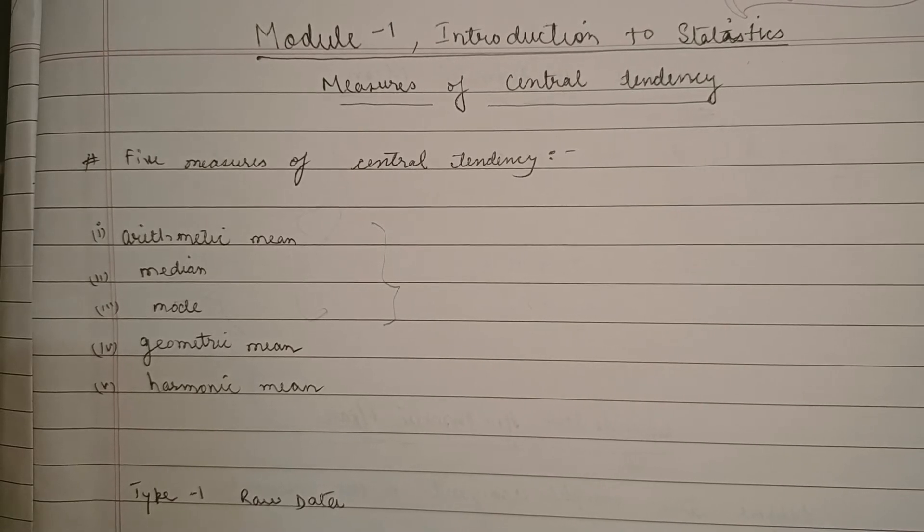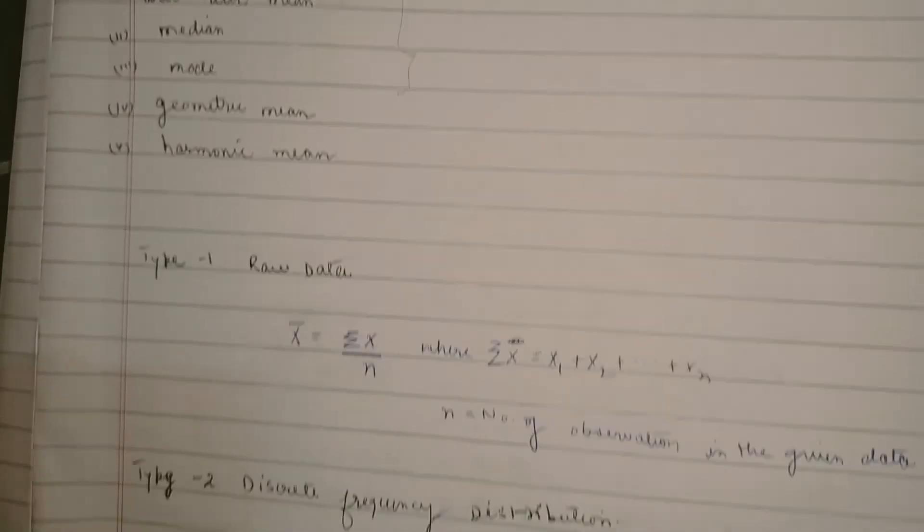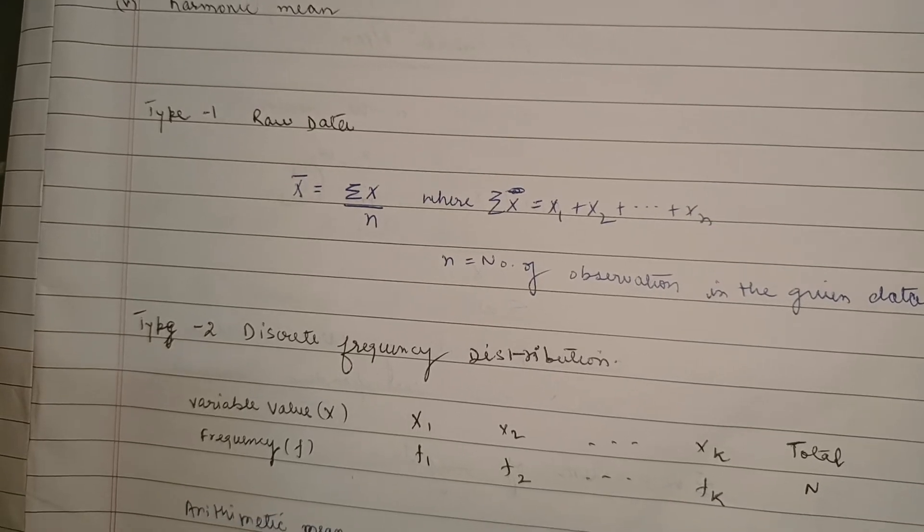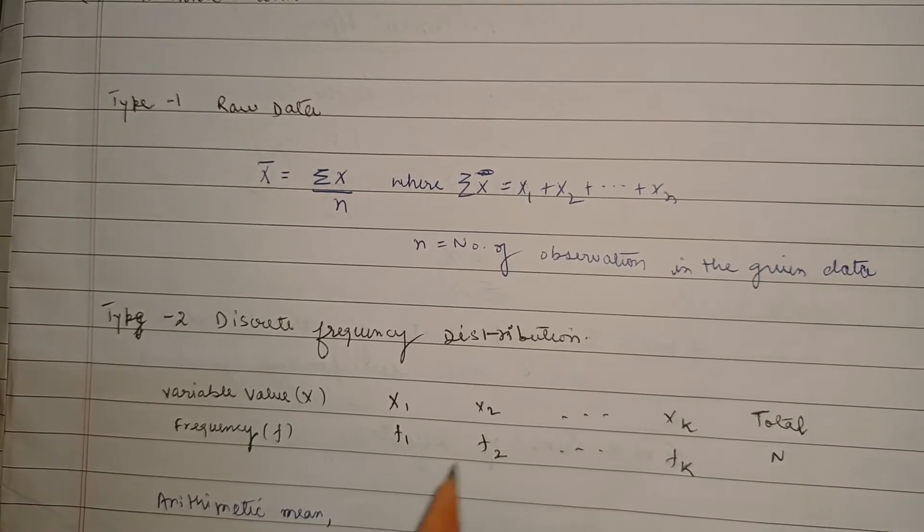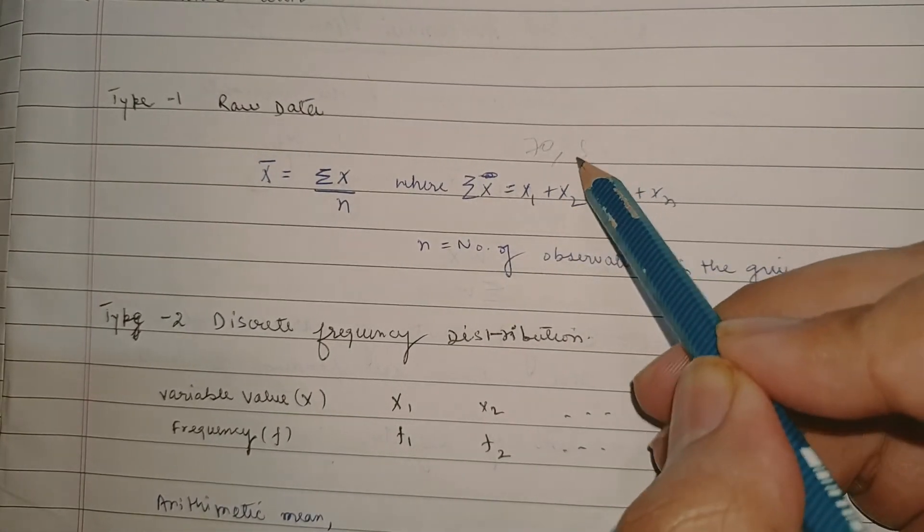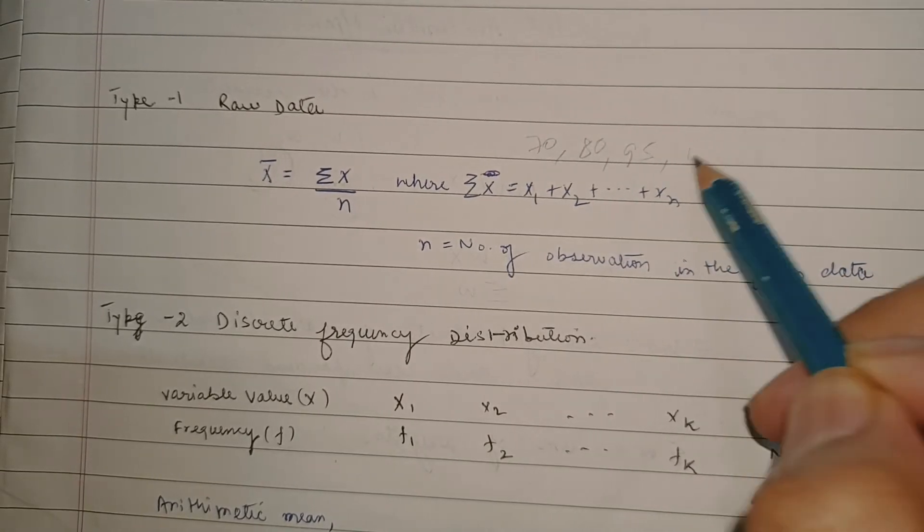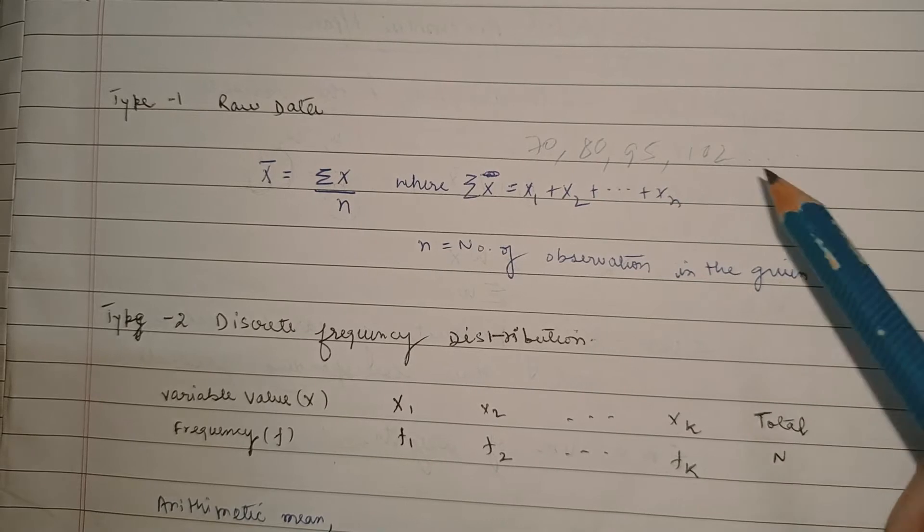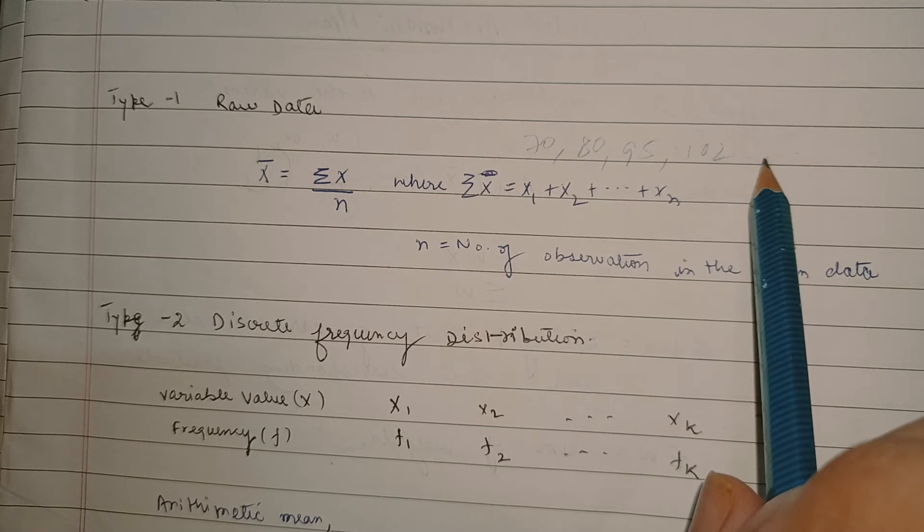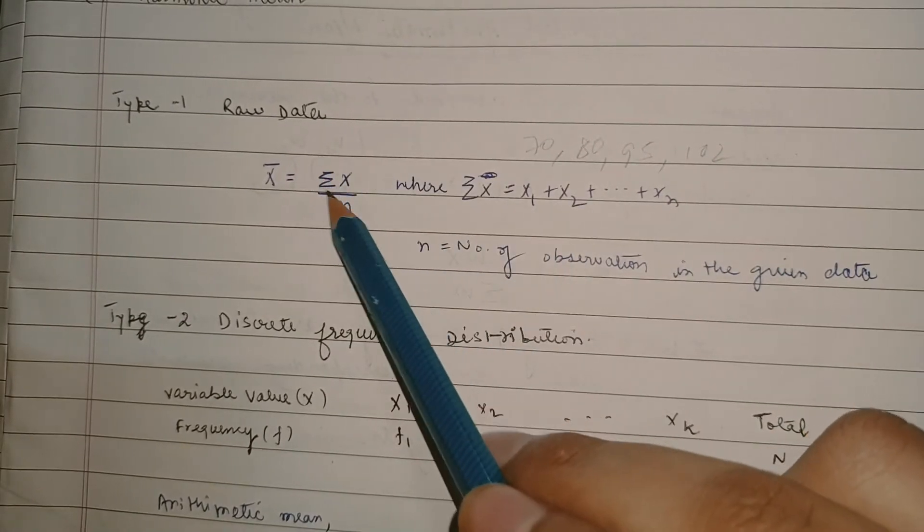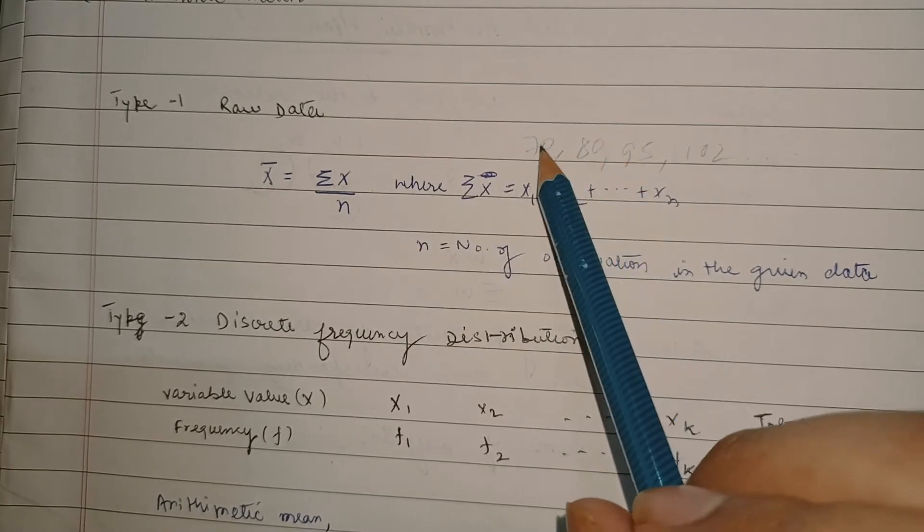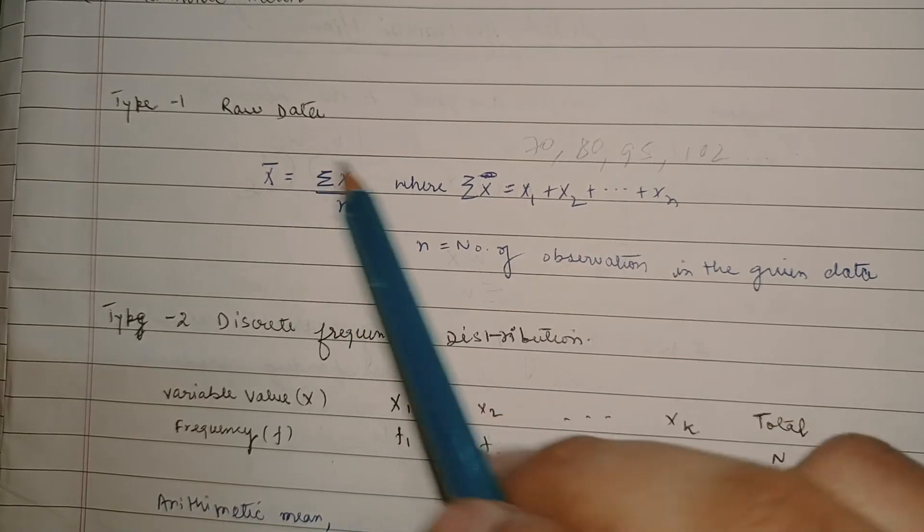So without wasting time let us move to mean. How do we find mean? There are various types of data given to you for finding mean. The very first kind is raw data. There would be observations given to you like 70, 80, 95, 102 and so on. What you need to do is just add those numbers, that would give you summation of x, and then count them. Like if we take 4 observations then divide by 4, you will get your arithmetic mean.